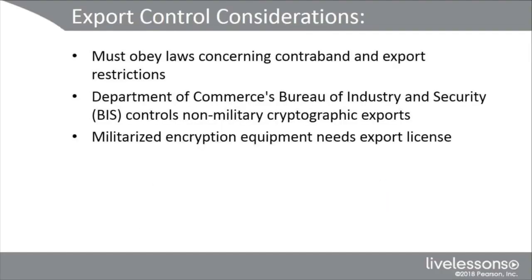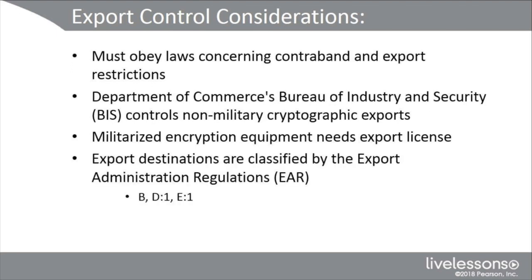Other items require singular BIS review and sometimes notification when exporting to other — actually, most countries. Militarized encryption equipment must be provided an export license. Export destinations are classified by the EAR into four country groups, which we can see on screen — B, D1, and E1 are the three main ones important for encryption purposes. For more information, you can search the Bureau of Industry and Security Cryptographic Controls.